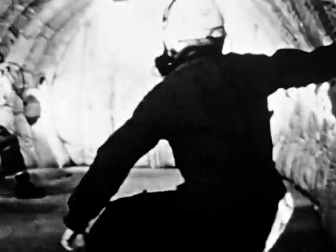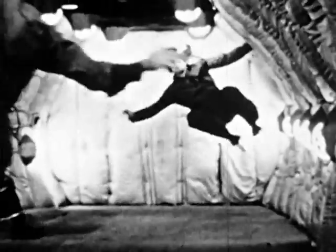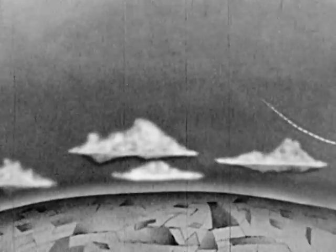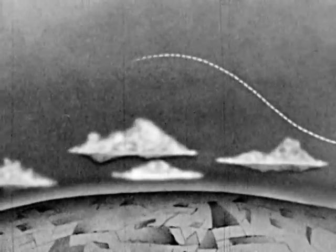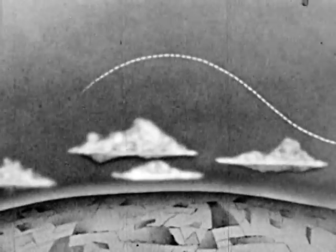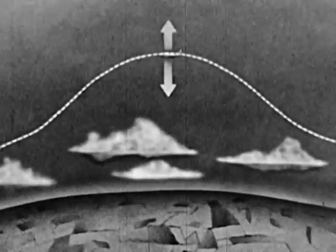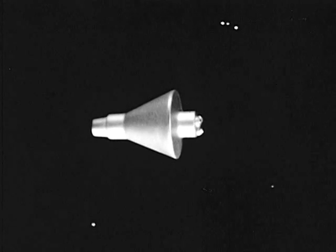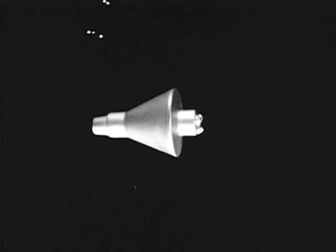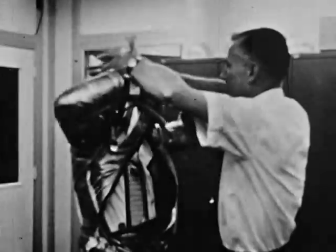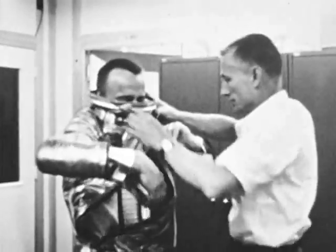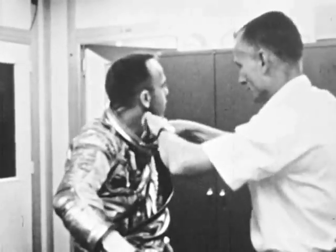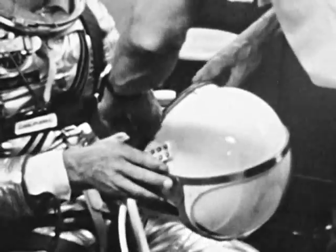These floating men are in an airplane flying a curved path whose outward pull equals the inward pull of gravity, thus simulating a capsule in orbit. So far we have studied the main problems of man's survival in space.